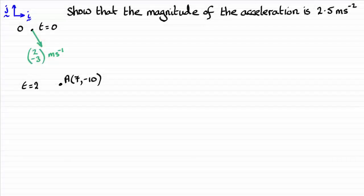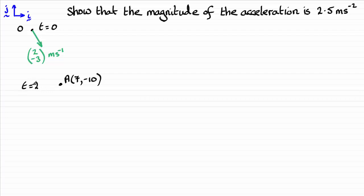For this question I've sketched the information we're given because I think it's more visually helpful. We've got our unit vectors i and j in an easterly and northerly direction respectively, and we're told the particle starts at point O when t equals zero, moves with an initial velocity of 2i minus 3j meters per second, and travels from O to A with constant acceleration where the position vector of A is 7i minus 10j. It reaches A after 2 seconds and we've got to show that the magnitude of that constant acceleration is 2.5 meters per second squared.